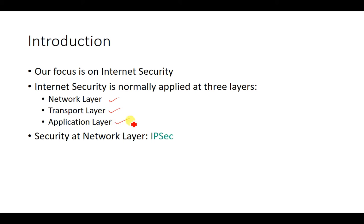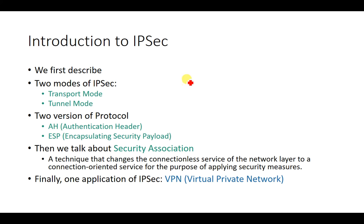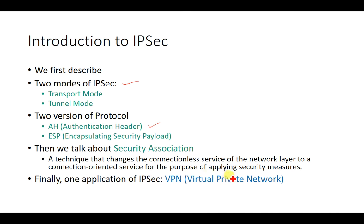When network security is applied on the network layer, that technique is called IP security or IPsec. In this series of discussions regarding IPsec, we will first cover two modes: transport mode and tunnel mode. Then we will discuss two protocols — AH (Authentication Header) and ESP (Encapsulating Security Payload). After that, we will talk about security association, a technique that changes the connectionless service of the network layer to a connection-oriented service for applying security measures.